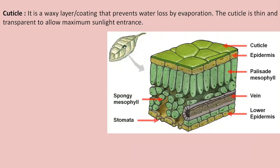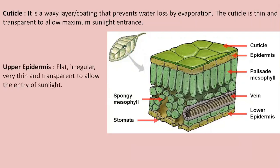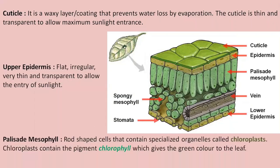Next to the cuticle is the layer of the upper epidermis. The cells here are flat, irregular, very thin and transparent to allow the entry of sunlight.